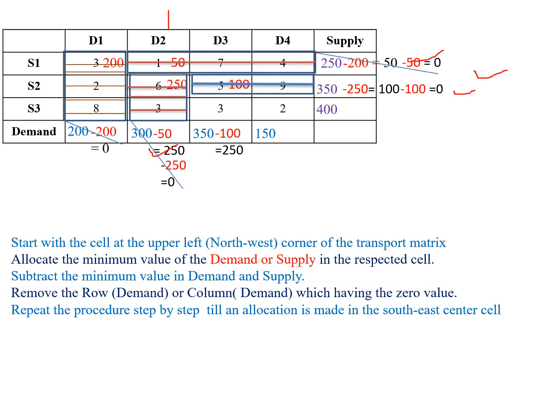Next, the upper-left corner cell has cost value 3. Supply is 400 and demand is 250. The minimum value is 250. We allocate 250 in the upper-left corner cell. Then subtract: 400 minus 250 equals 150 for supply, and 250 minus 250 equals 0 for demand. D3 column has zero value, so we remove the D3 column.